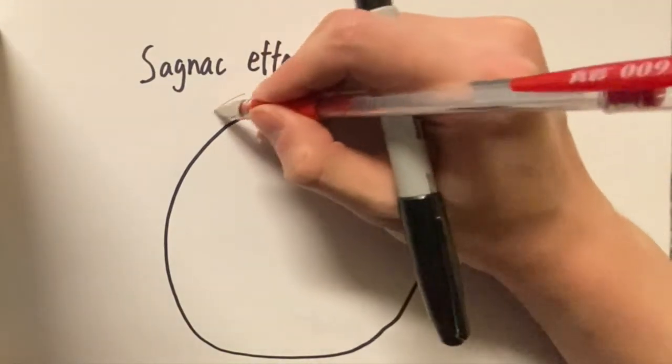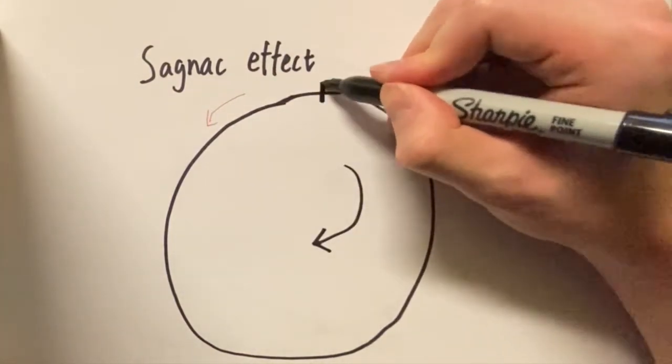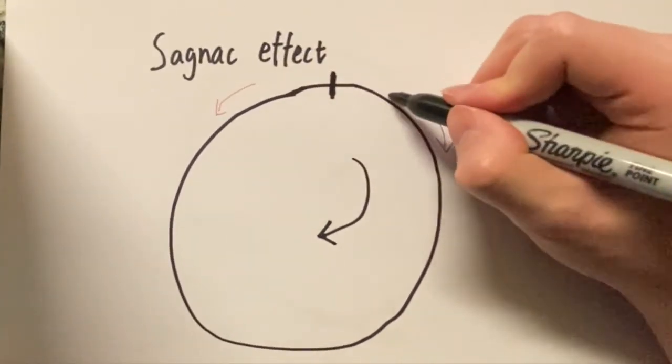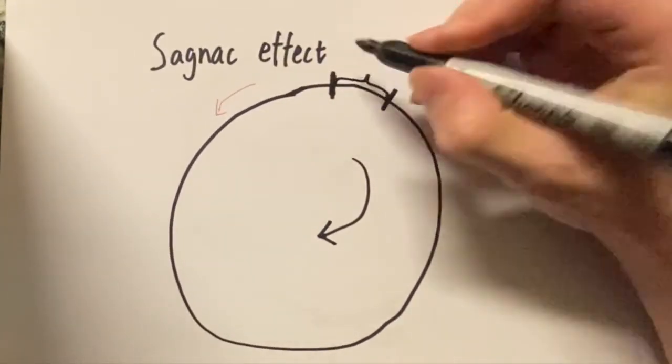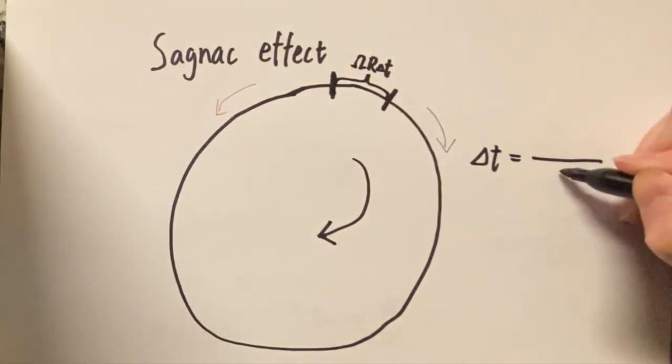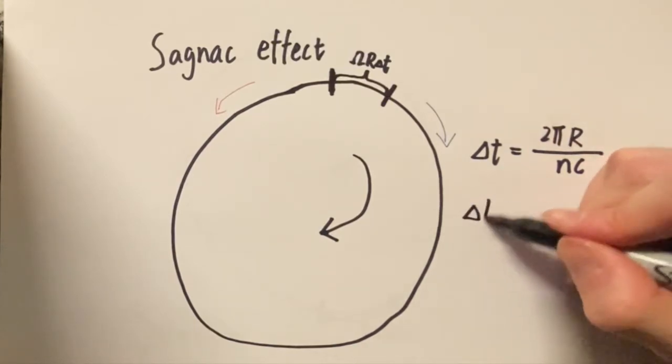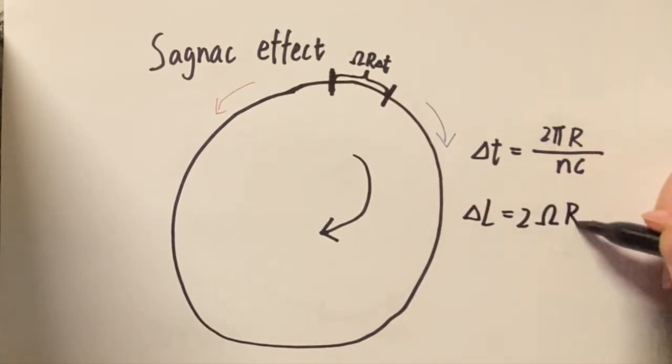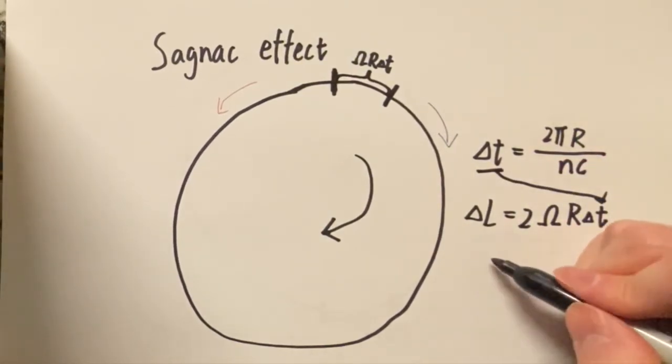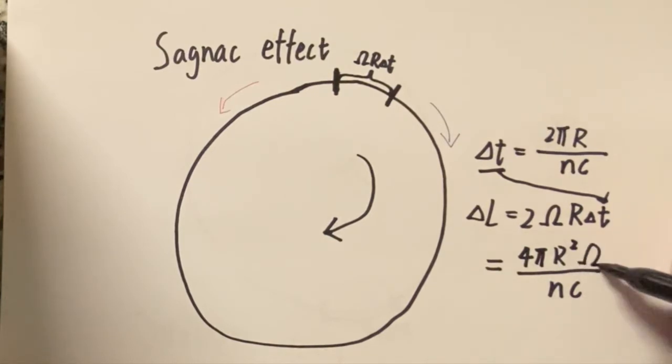For example, if we had the angular rotation going clockwise, the clockwise beam, starting from here, will travel this much to get back to the original point. So it's more than a loop. This distance is omega r delta t. Delta t is the time that the light takes to travel within the ring, 2 pi r divided by nc. And the counterclockwise beam will travel this distance less for one loop. We can see the path difference as 2 omega r delta t. Replacing delta t, it will be 4 pi r square omega divided by nc.